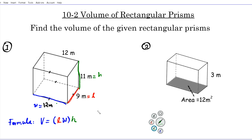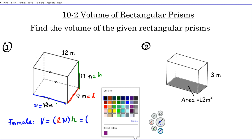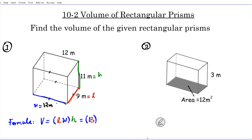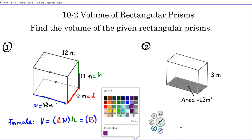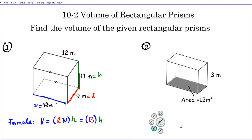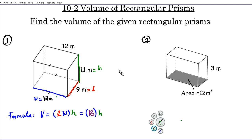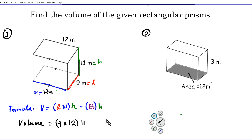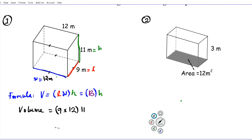Now we have everything we need to find the volume of this prism. We can also write the formula as V = B × h, where big B is the area of the base multiplied by the height. Let's substitute the values of length, width, and height into our formula. The volume is going to be the length — which is 9 — times the width — which is 12 — times the height, which is 11. Multiplying 9 times 12 gives us 108.